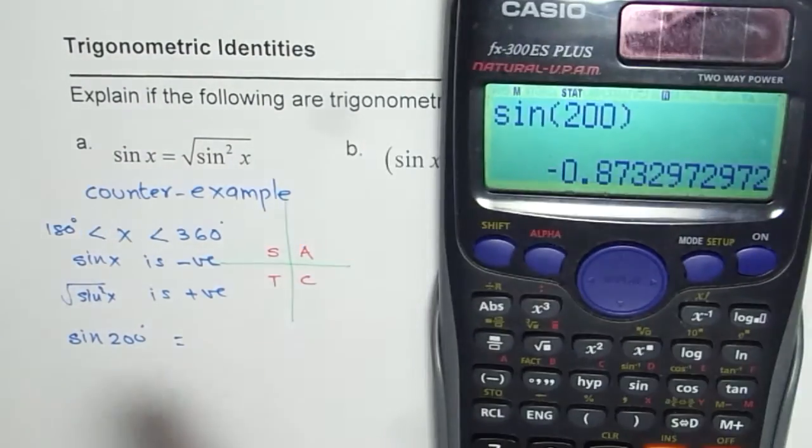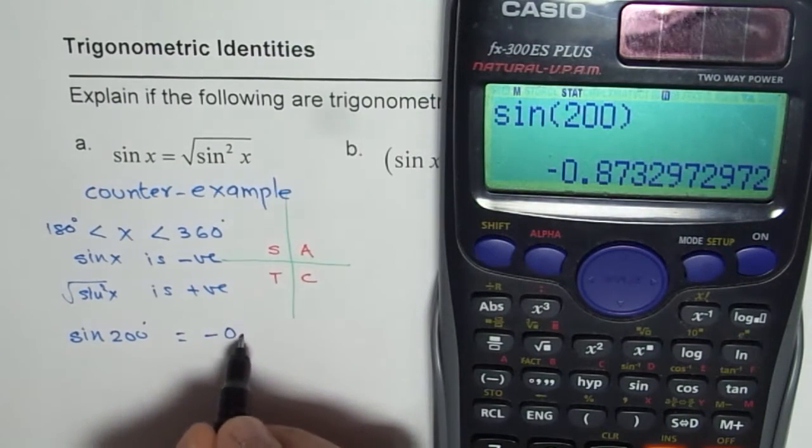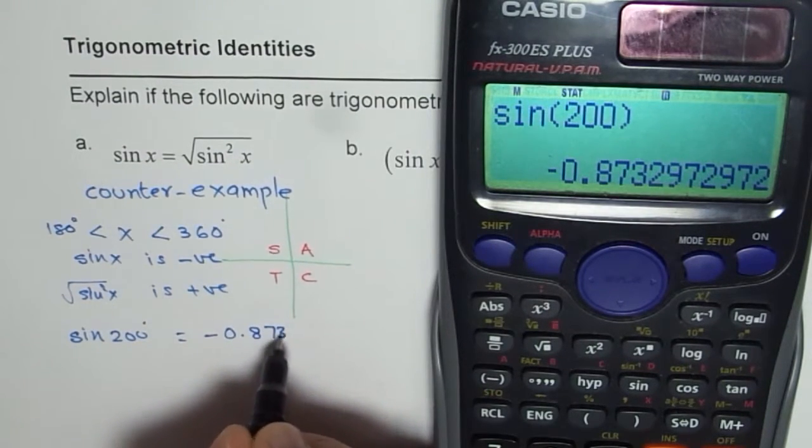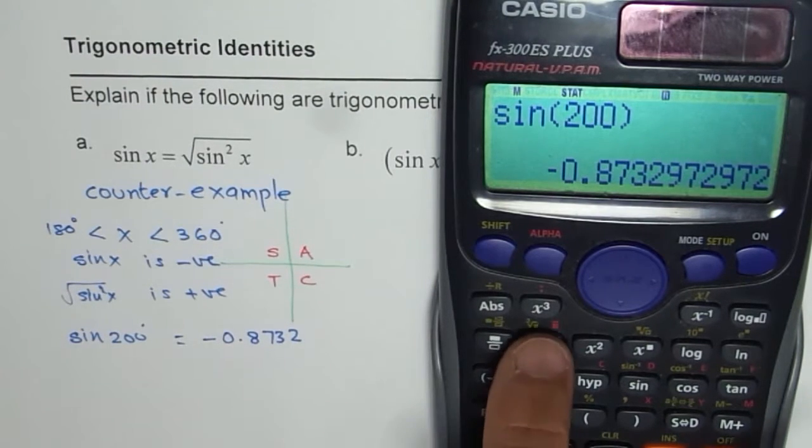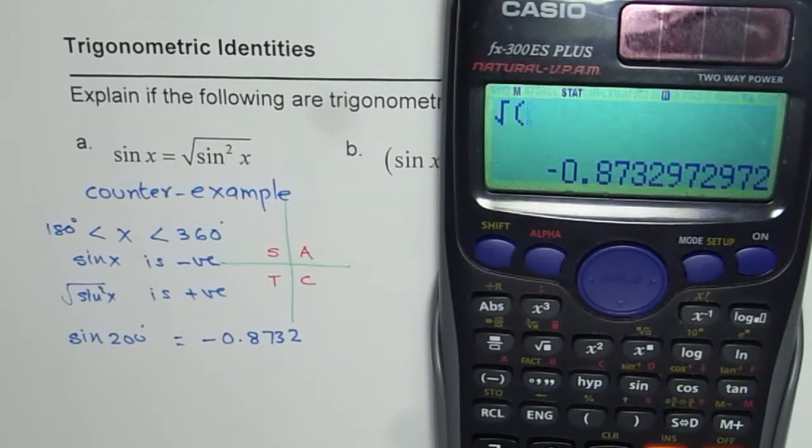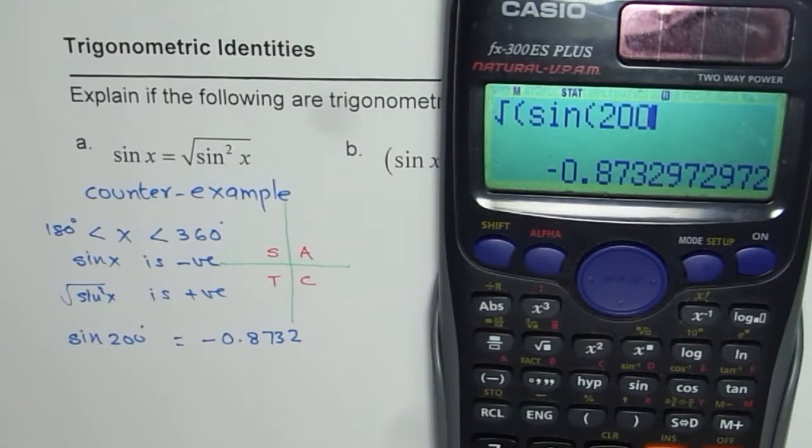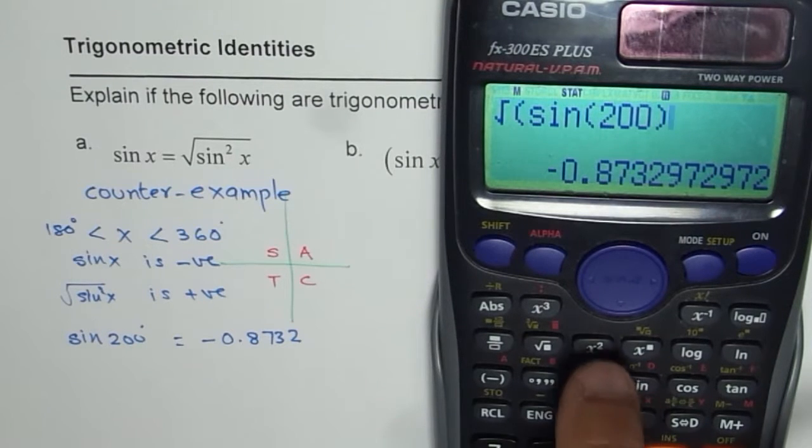Now, if I use the same value here, I say square root of sin of 200 within bracket, and then we square this.